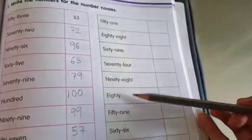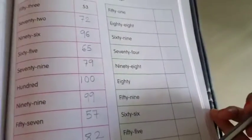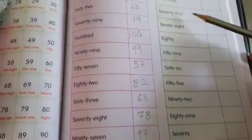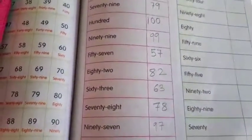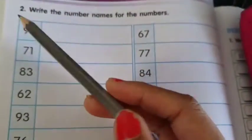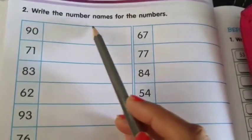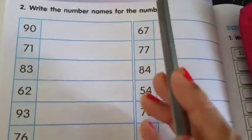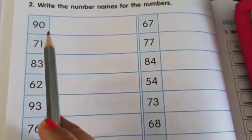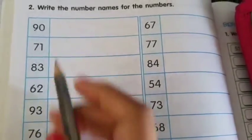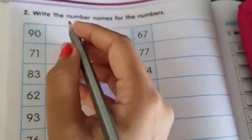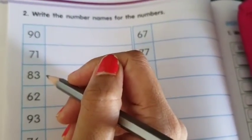Okay. Now you can see there are more number names given so you have to do this on your own. Okay, now see page number 78. Question number 2. Write the number names for the numbers. So you can see numbers are written here and you have to write the number names beside the numbers. First number is 90. So how you will write in number name?